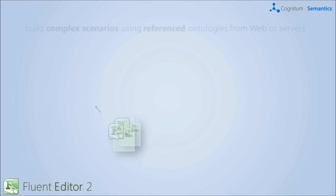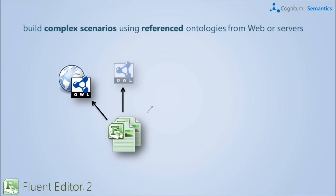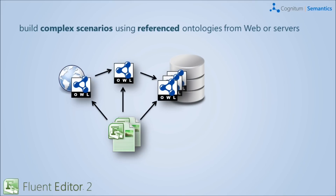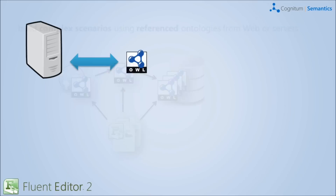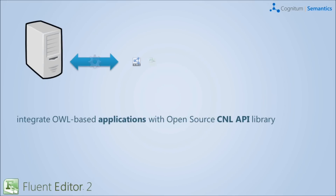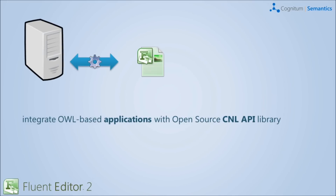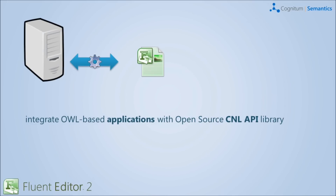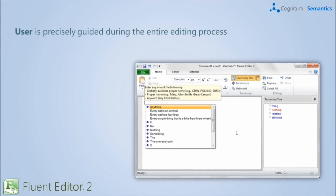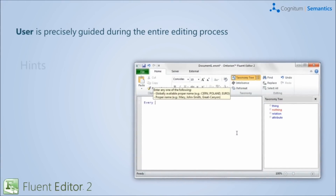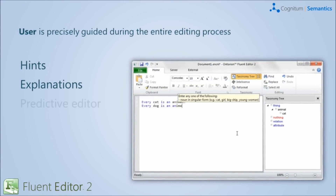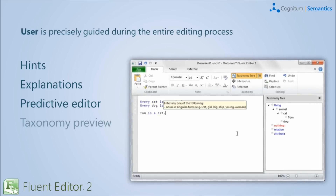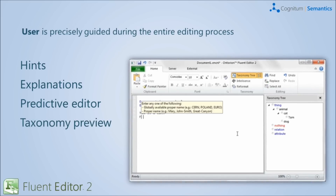You can build complex scenarios using referenced ontologies from the web or servers. You can integrate OWL-based applications with the open-source CNL API library. The user is precisely guided during the entire editing process, with hints, explanations, a predictive editor, as well as taxonomy preview.